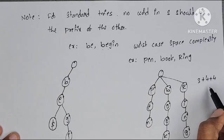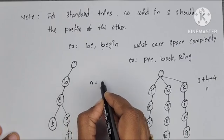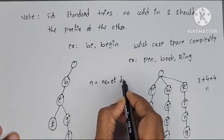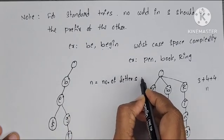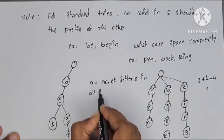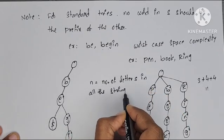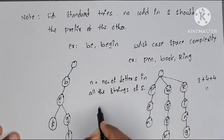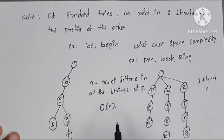Total 3 plus 4 plus 4, 11 nodes we have created. Here, N is number of letters in all strings. In a set, three strings we have taken, so total letters are 11. In worst case, big O of N. Like this, we can insert strings into try data structure.